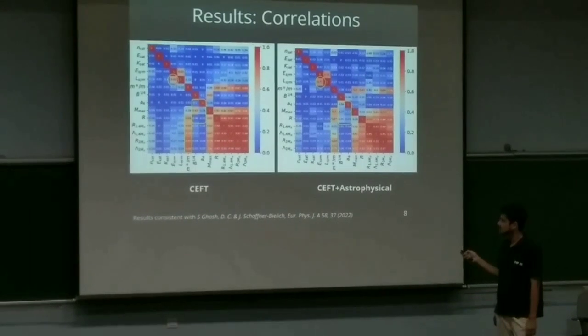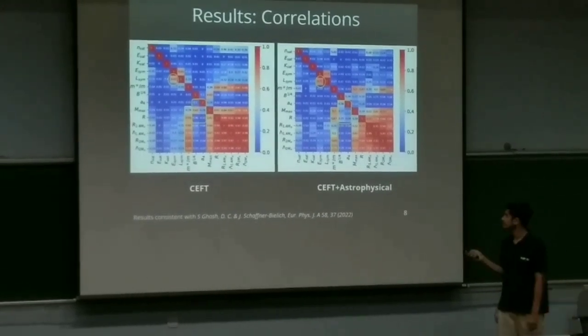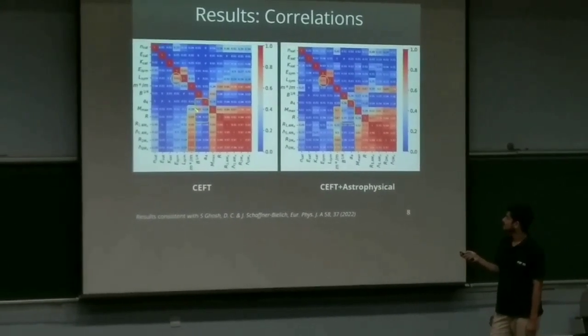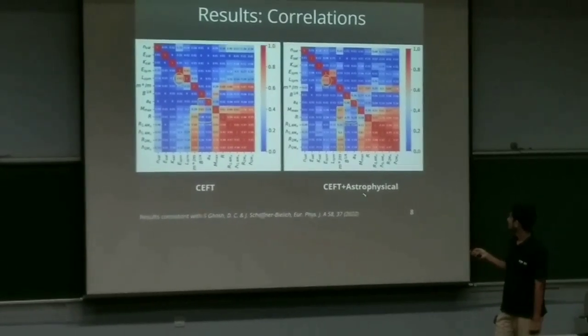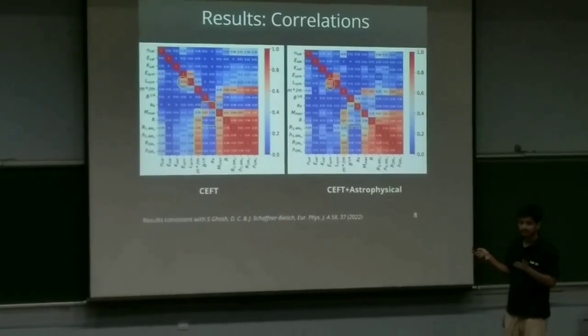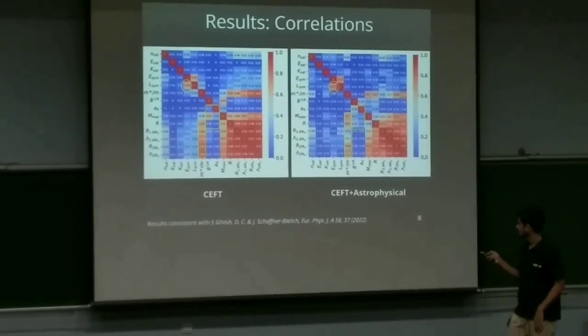These parameters, B and a4, which come from the quark equation of state. As we see, B is well correlated with the maximum mass of neutron stars, and after adding astrophysical constraints all become moderately correlated.